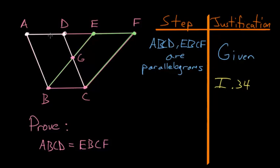the opposite sides, AD and BC are equal. So, AD equals BC, and we can use this same logic to show that in the parallelogram, EBCF, that EF is also equal to BC.